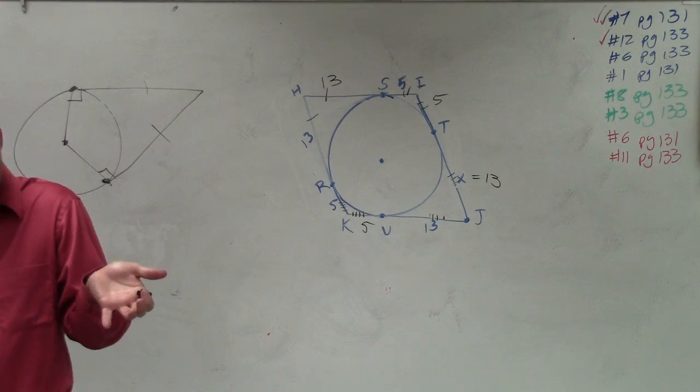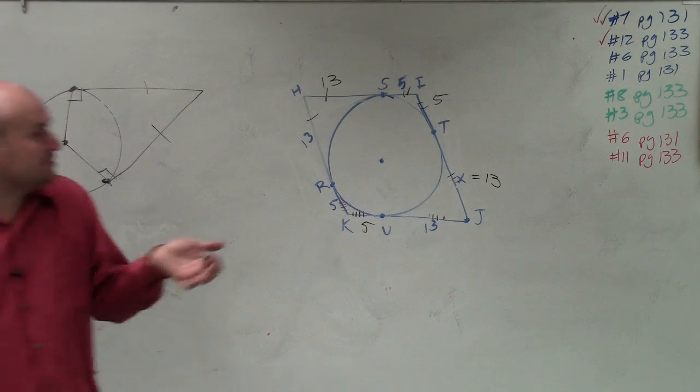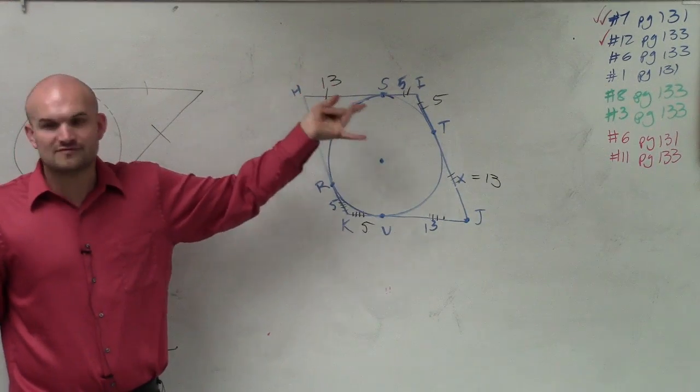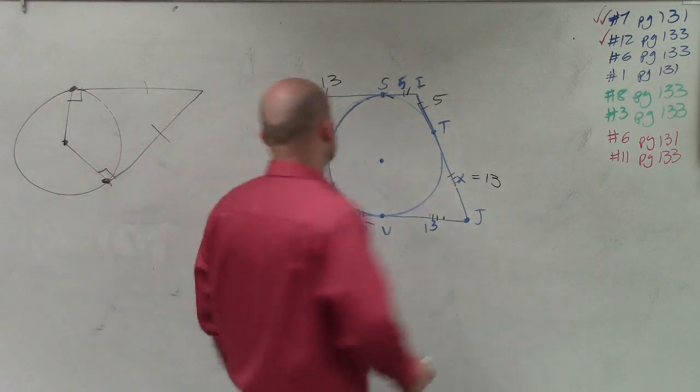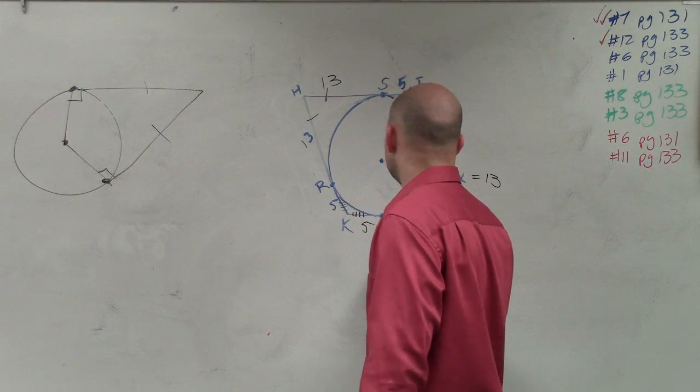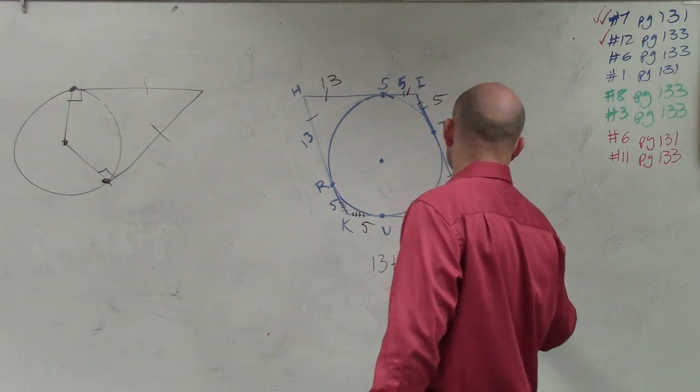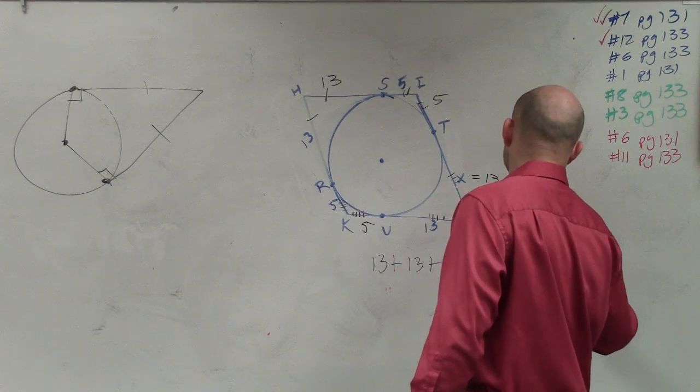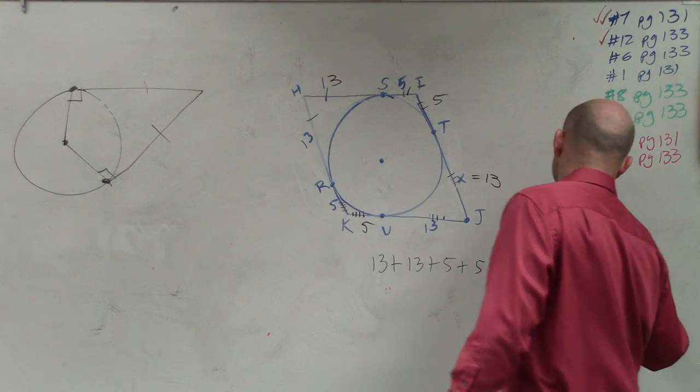So all you do is find the tangent sides that contain the same exterior point. Those have to be equal in length. And then it says find the perimeter. So now I just add everything up. So I do 13 plus 13 plus 5 plus 5 plus 13 plus 13 plus 5 plus 5.